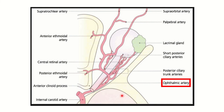Here we can see the optic canal. Through the optic canal, two important structures pass. We can see a large nerve going to the eyeball — this is the optic nerve, which passes through the optic canal. We can also see another vessel, an artery, passing through the optic canal, and this artery is known as the ophthalmic artery. So through the optic canal, the optic nerve and ophthalmic artery pass. No other nerve passes through the optic canal.